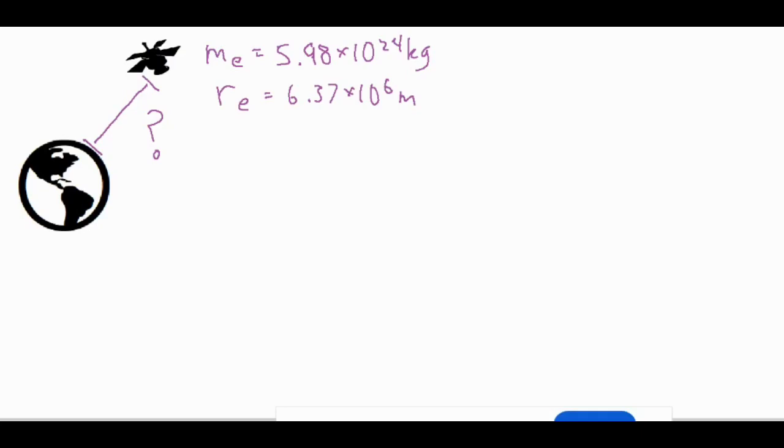In this video we're going to be taking a look at a geosynchronous satellite problem and we're going to be solving for the height a satellite would have to be off the ground in order to be geosynchronous, which is basically hovering above the same part of the earth as it orbits around it.